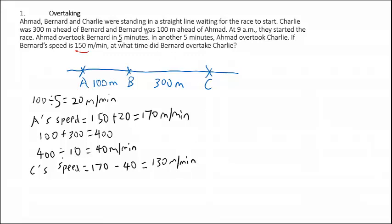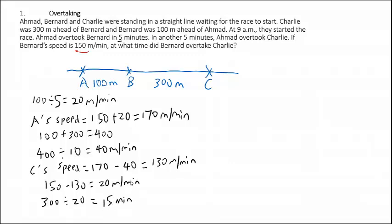Remember our goal — we want to find out what time Bernard overtook Charlie, meaning how long Bernard took to overtake Charlie. To do that, we take the difference between Bernard's speed and Charlie's speed: 150 minus 130 equals 20m per minute. This is the speed difference between Bernard and Charlie. The distance between Bernard and Charlie is 300m, so to find the time for Bernard to overtake Charlie, we take 300 divided by 20, giving us 15 minutes. Bernard takes 15 minutes to overtake Charlie.